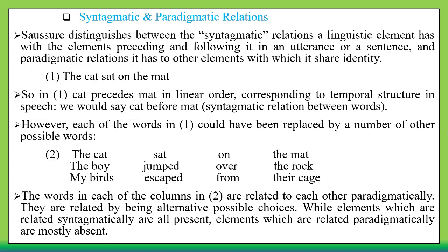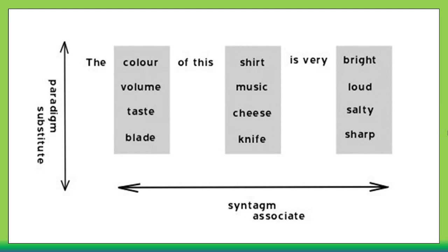Syntagmatically related elements are all present in the sentence, while paradigmatically related elements are mostly absent — we only look for them when we want to replace a word. As the image shows, syntagmatic relation is horizontal and paradigmatic relation is vertical.